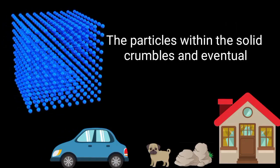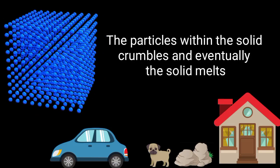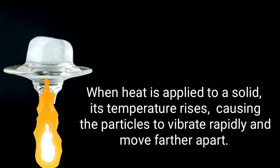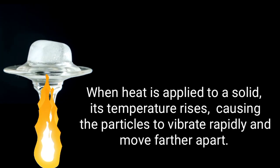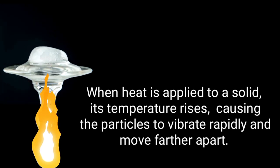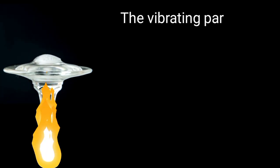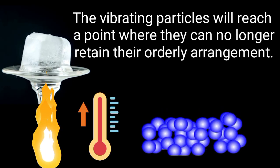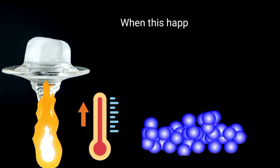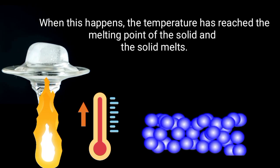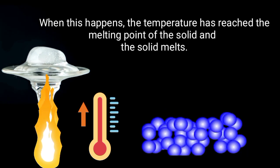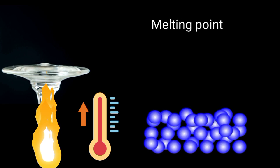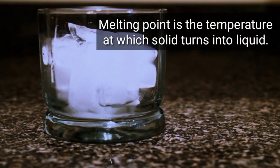The particles within the solid shift and eventually the solid melts. When heat is applied to a solid, its temperature rises, causing the particles to vibrate rapidly and move farther apart. The vibrating particles reach a point where they can no longer retain their orderly arrangement. When this happens, the temperature has reached the melting point of the solid, and the solid melts. Melting point is the temperature at which a solid turns into a liquid.